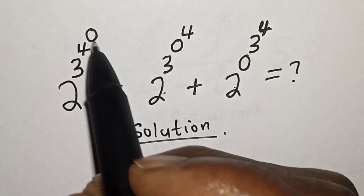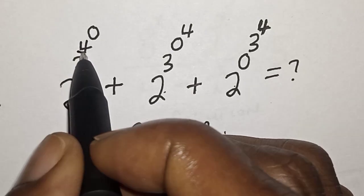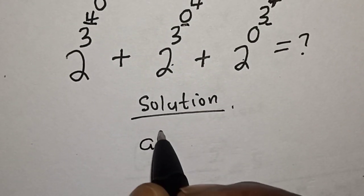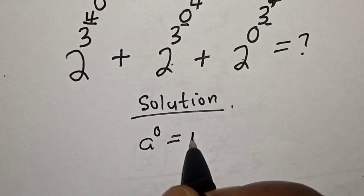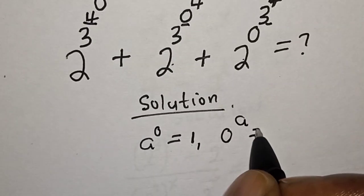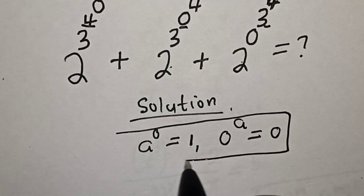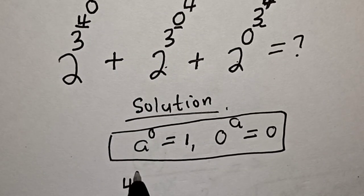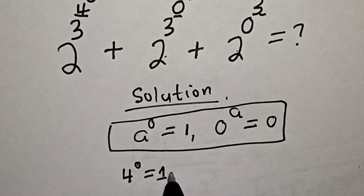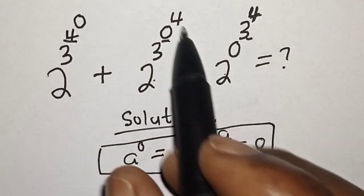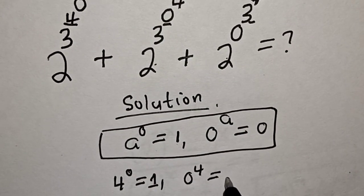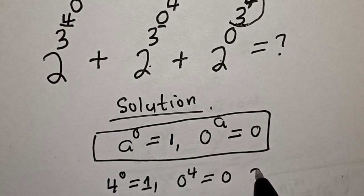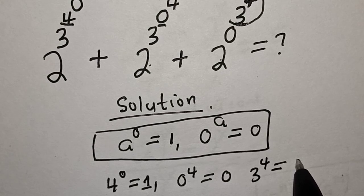To solve this problem, we start from the innermost exponents: 4 raised to power 0, 0 raised to power 4, and 3 raised to power 4. Take note: a raised to power 0 is equal to 1, and 0 raised to power a is equal to 0. So 4 raised to power 0 equals 1, 0 raised to power 4 equals 0, and 3 raised to power 4 equals 81.